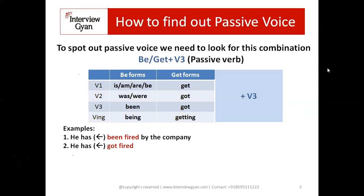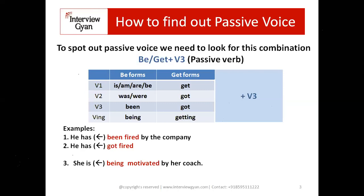There is a minor difference between 'been fired' and 'got fired' — both are passive, but: 'He has been fired' means he has no mistake of his own; it was the company's decision to remove him. 'He has got fired' means he made some mistake or there was some fault on his part, which is why he was fired. We will look at the be-form versus get-form difference in more detail later. Example three: 'She is being motivated by her coach.' The combination 'being motivated' — being (be form) plus motivated (third form) — is the passive indicator. The meaning is 'usko motivate kiya ja raha hai uske coach ke dwara.'